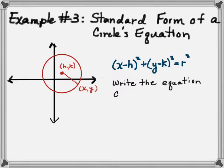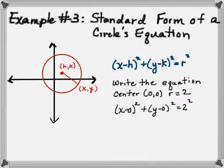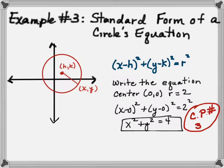So if I want to write the equation of a circle whose center is at 0, 0 and whose radius is 2, it's x minus 0 squared plus y minus 0 squared equals 2 squared. I'm just plugging in. Plug and chug. So this means it's going to be x squared plus y squared equals 4. Go do your checkpoint number 3 and then come back.